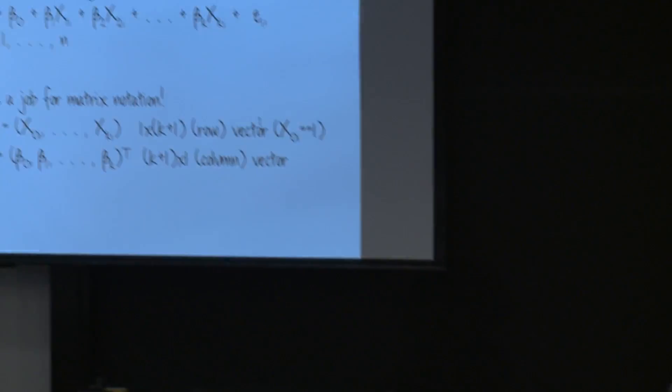So this is a job for matrix notation. We don't have too much time, but I'll just get started here. So let's replace this whole parade of X's with a vector, a row vector. And let's say, let's define a new X that's identically equal to 1. And that's called X sub 0. And the reason we do this is because sort of implicitly in the bivariate regression, we had beta 0 times 1. We never had the 1 there, but sort of implicitly there was a 1 multiplying beta 0, and then we had beta 1 times X sub i. Well, here we want to explicitly have the 1 in that first spot so we can do everything in matrix notation.